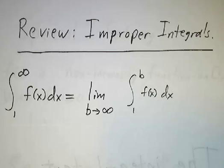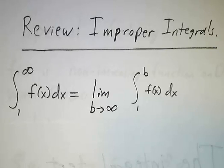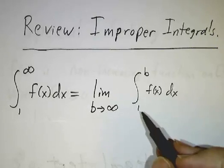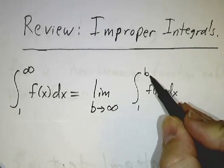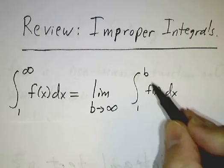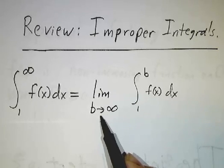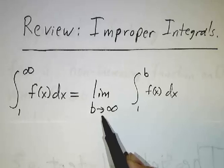We're interested in integrating a function from 1 to infinity. We know what it means to integrate a function from a to b — it means we write it as a limit of a sum where we chop things into pieces. The trouble is you can't chop the region from 1 to infinity into n finite pieces, so instead we integrate from 1 to a large number b, and then consider what happens as we integrate over a bigger and bigger region.